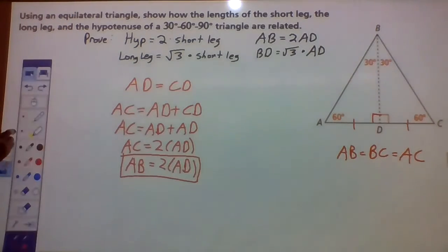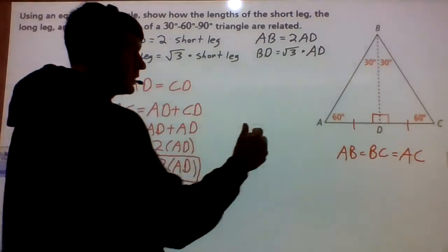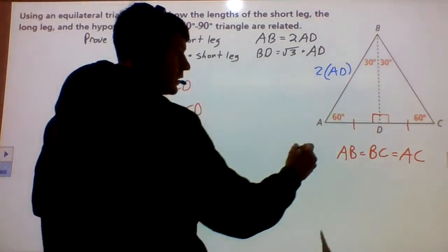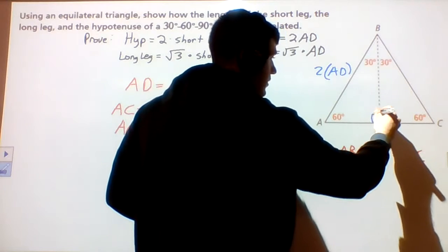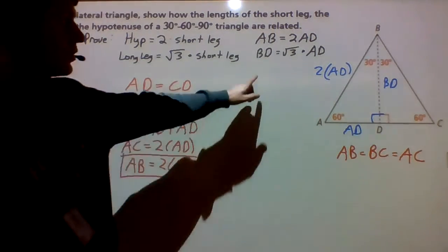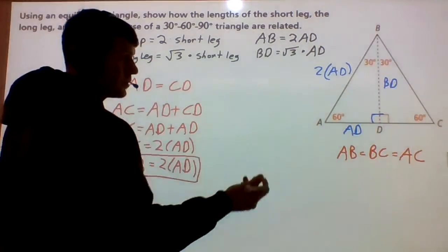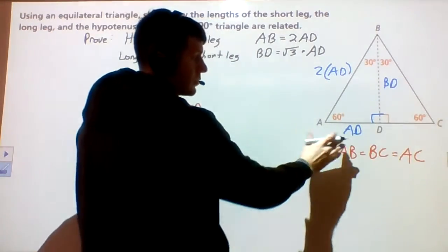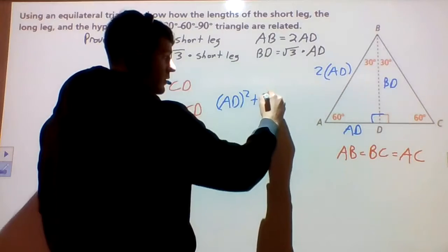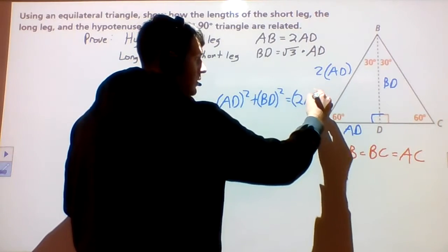Now we have to do the other one, and we can use the Pythagorean theorem. We know AB is equal to 2 times AD, and this piece here is AD. We're going to show that BD is equal to the square root of three times AD using the Pythagorean theorem. So A squared plus B squared equals C squared — leg squared plus leg squared equals hypotenuse squared. So: AD squared plus BD squared equals the hypotenuse squared, which is (2 times AD) squared.